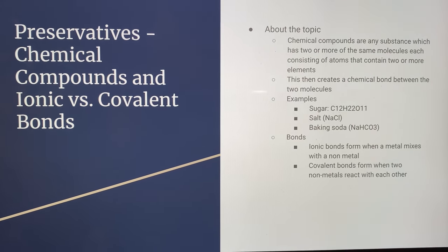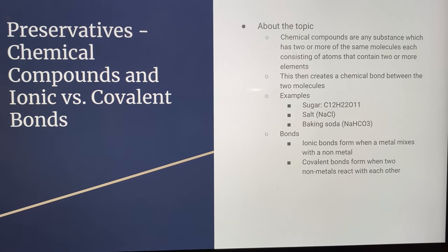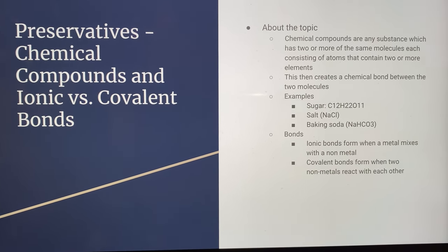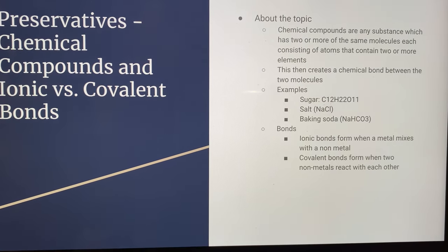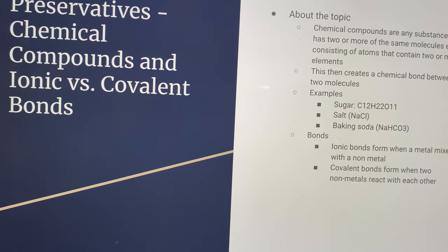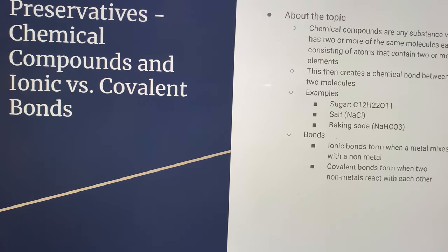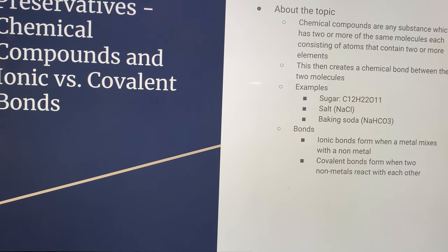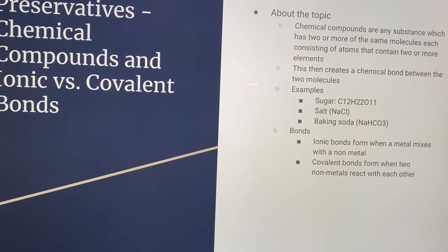The first topic is preservatives. Preservatives contain chemical compounds and ionic versus covalent bonds. Chemical compounds are any substance which has two or more of the same molecules, each consisting of an atom that contains two or more elements. This creates a chemical bond between the two molecules.